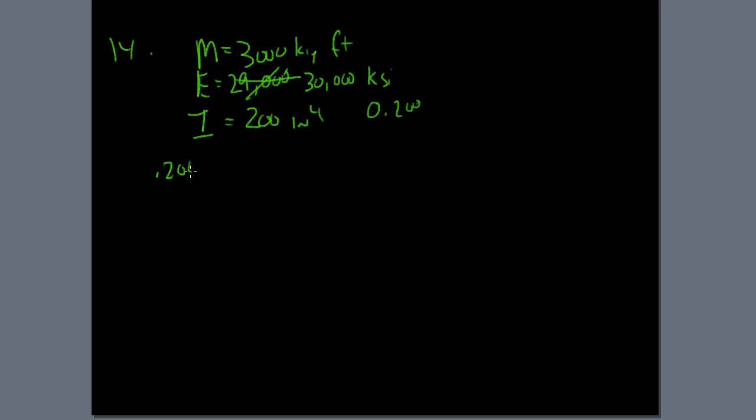Problem 14. Now we're looking at problem 14, which is as simple as this. Calculate the radius of curvature given a moment equals 3,000 kip feet. Steel has its stiffness of 30,000 KSI and a moment of inertia of 200 inches to the 4th. Now those who took 0.200 I would give you credit. But you have to realize when you have got inconsistent numbers or syntax where you have something that's written .200 in a document, there's a pretty good chance that the point is extra.